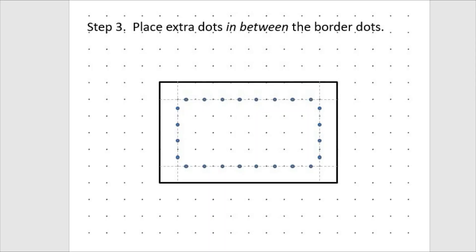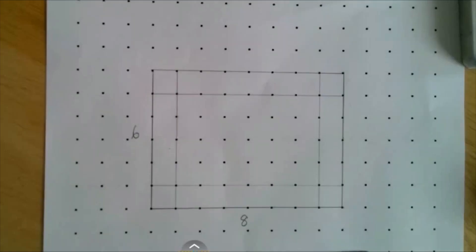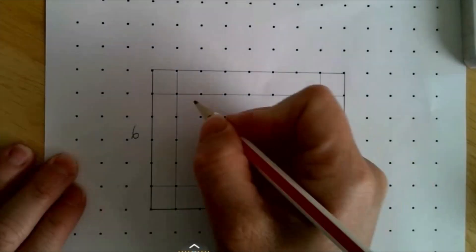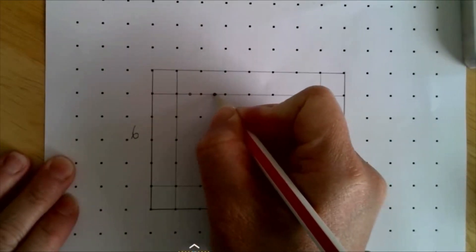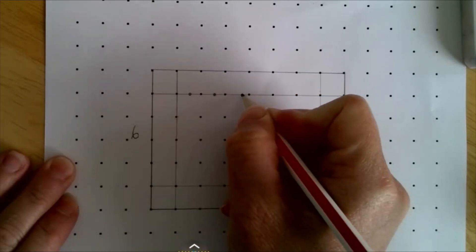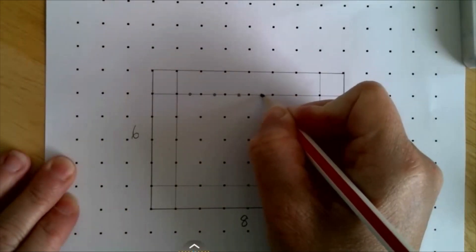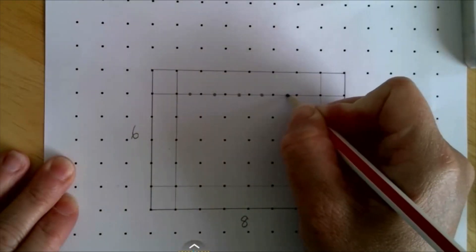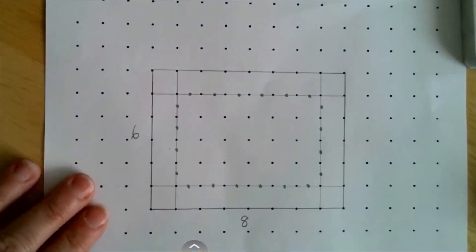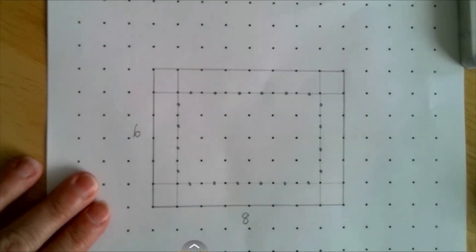Step three is place extra dots in between the border dots, as you can see here. So I'm going to start at the top and fill in some extra dots. So these go on the faint board that I made, and they go in between the existing dots. I've just completed all the dots and it would look like this.